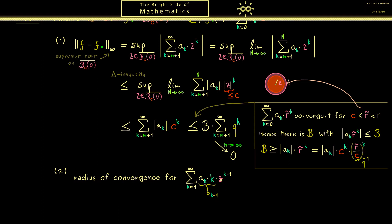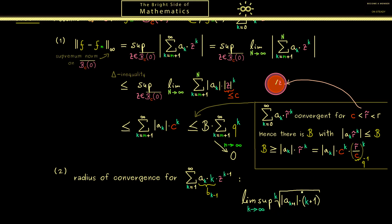For the radius of convergence we calculate the limit superior of the k-th root of the absolute value of the coefficient Bk, which gives us the absolute value of ak+1 times k+1 to the k-th root. This splits into two parts: the part involving ak gives the original radius of convergence r, and the factor k+1 to the 1/k goes to 1 as k goes to infinity. Therefore the radius of convergence of the derivative power series is the same as the original, and we can redo all the steps with Bk instead of ak. That's enough for part 2.